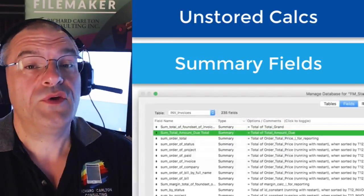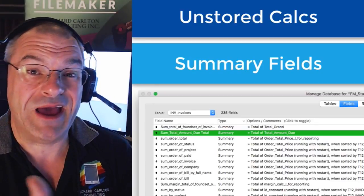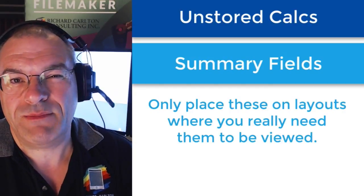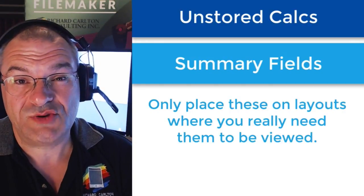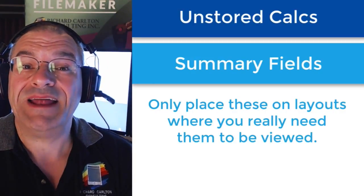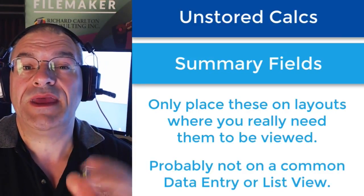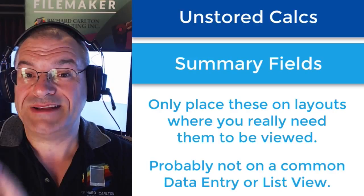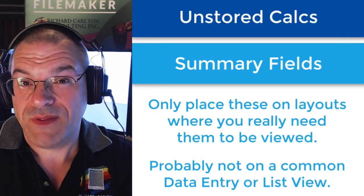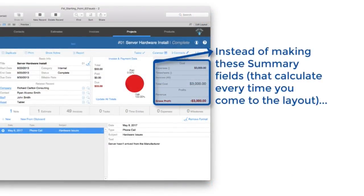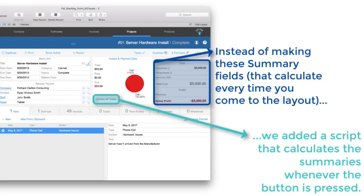So what you want to do is feel free to define in your FileMaker custom app an unstored calc or a summary field, but only place them on a layout where you really need them to be viewed. On a common data entry screen or maybe a common list view, you may not need to see these at all. But if there's a situation where a user needs to see that information, you might consider making that a button that pops another layout where they see that information only at that time. Because if you put this unstored calc or the summary field on the layout, even if the user doesn't need the information, FileMaker is going to process it anyway — every time you leave the layout and come back to the layout, it's going to do it all over again.